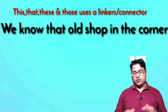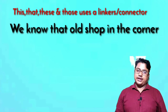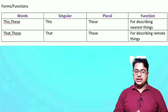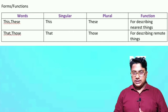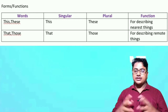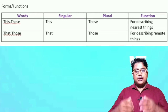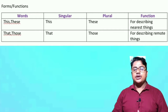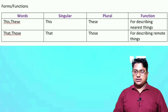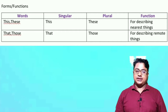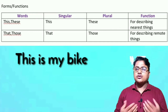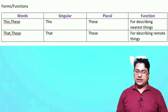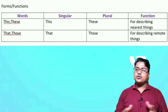Now let's look at the form of these four words. 'This' is a singular word and its plural is 'these.' This and these are used for describing the nearest things. 'That' is singular and its plural is 'those.' That and those are used for describing remote things. For example: 'This is my bike.' I want to describe something near to me, something around me or beside me — so I say 'this is my bike.' It is the nearest thing, and because 'this' is singular, we use the singular verb 'is.'